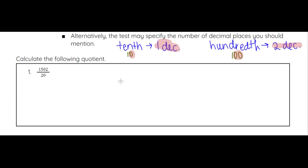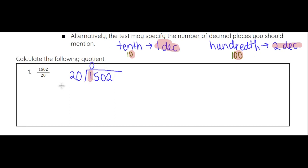Let's take a look at this example: 1,502 divided by 20. Neither number is a decimal, so we don't have to worry about that. Setting it up — the first digit, 1, is not divisible by 20, so we put zero there. Then 15 is also not divisible by 20, so we put another zero. Then we look at 150.